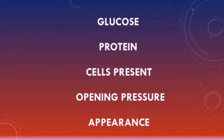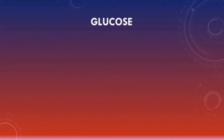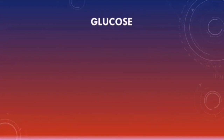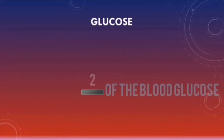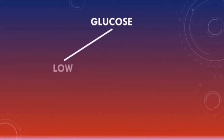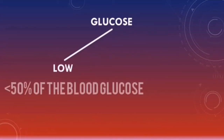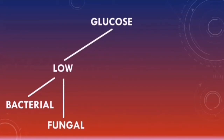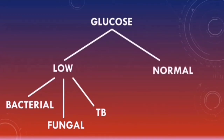When analyzing the glucose inside the CSF, it's important that we also have a value for the blood glucose levels so that we can compare both values. The normal range for CSF glucose is about two-thirds of the blood glucose levels. A low CSF glucose, around less than 50% of blood glucose, could indicate bacterial, fungal, or tuberculosis meningitis. A normal CSF glucose level usually indicates viral meningitis.